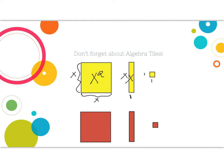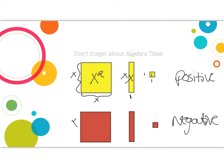Our last tile here is one by one, so this is just a ones tile. The yellow tiles represent positive and our red ones represent negative tiles. So we have an x and an x length here, and one of those must be negative for this to be a negative x squared tile. This is our negative x tile — again, one of our side lengths must be negative. And this is our negative one tile.